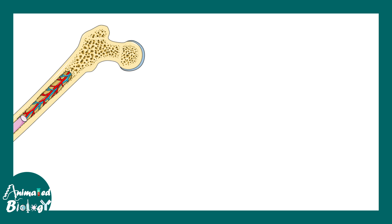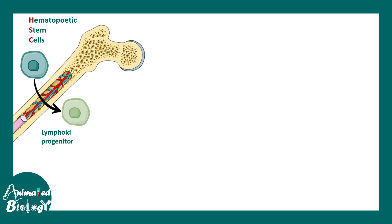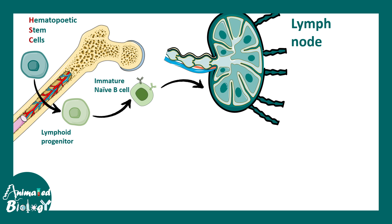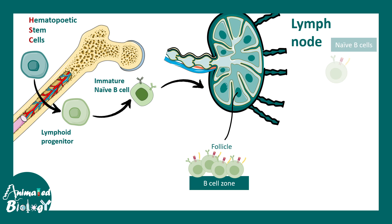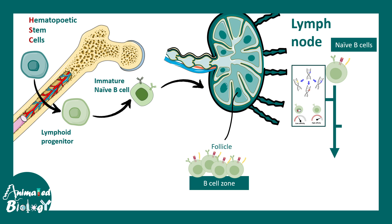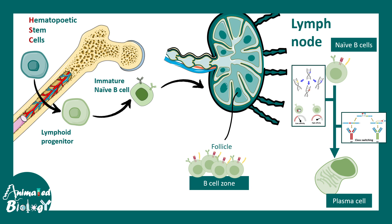To understand multiple myeloma, let's look at the overall B cell developmental trajectory. B cell development starts in the bone marrow from hematopoietic stem cells, giving rise to lymphoid progenitors and then immature B cells, which leave the bone marrow and go to external lymphoid tissues like lymph nodes. Inside the lymph node follicles, B cells encounter antigens, become activated, and undergo somatic hypermutation and class switching. After these processes, B cells become antibody-secreting plasma cells, secreting antibody of a defined isotype such as IgG.